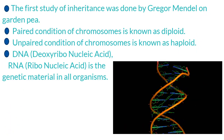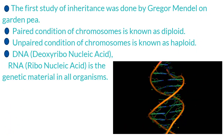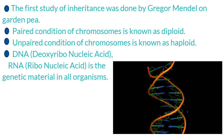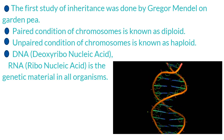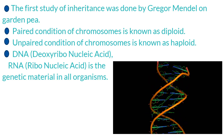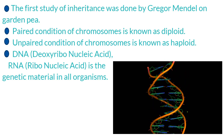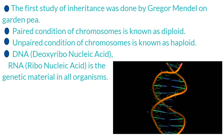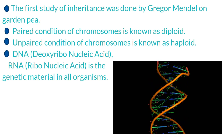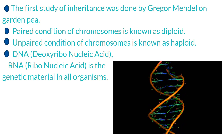The first study of inheritance was done by Gregor Mendel on Garden Pea. Paired condition of chromosomes is known as diploid. Unpaired condition of chromosomes is known as haploid.